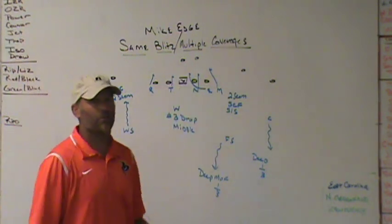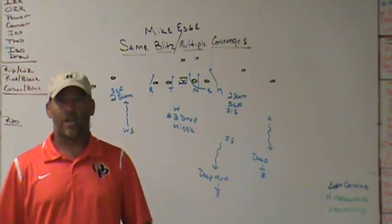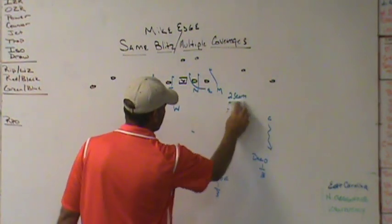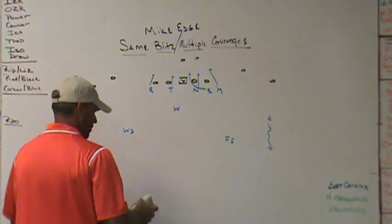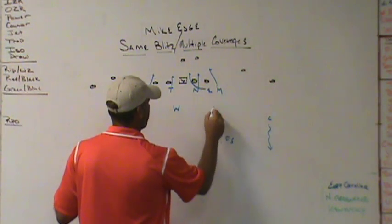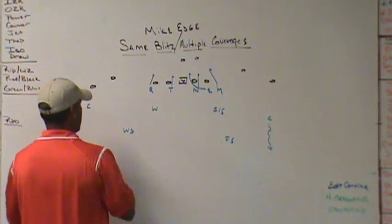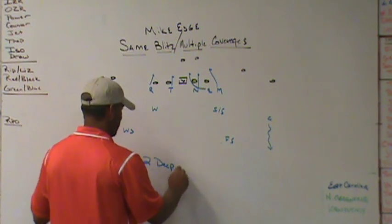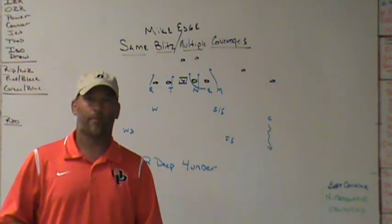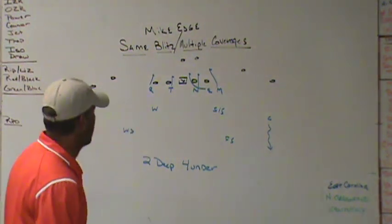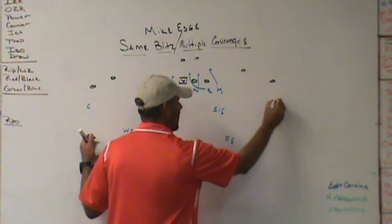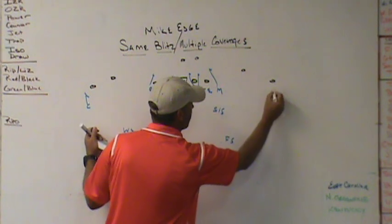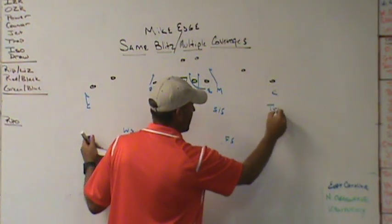We're going to teach it more as a spot drop, seam-curl-flat — take away the seams first, rally to balls in the flat late. Sometimes we'll press the corners to take away that easy throw in the flat. Now for argument's sake, let's say you're getting beat to the flat or getting beat with quick game. Run the same pressure — same exact Mike edge pressure — but now run it with a four-under two-deep concept. You're going to leave your corners in the flat playing however you want: funnel hard inside, press funnel, trap technique from slightly off.